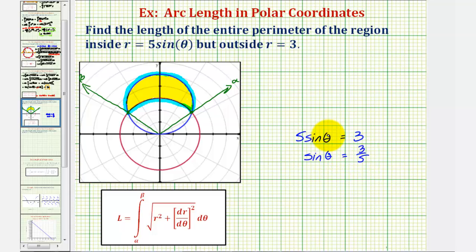Having a sine function value of three fifths will not give us a nice reference angle, or an angle we can find on the unit circle, so we'll have to use the calculator. To solve this for theta, we'll take inverse sine of both sides.